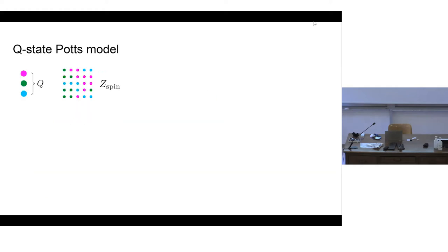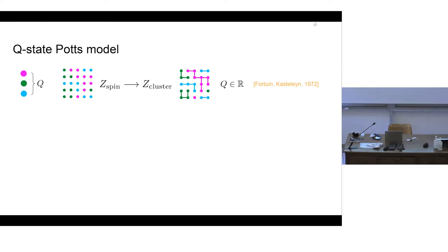A starting point to study the percolation model is to map it to a local spin model, which is given by the q-state Potts model. Each lattice site has a spin variable taking q possible different states, and we can write down the partition function in terms of spin configurations. We can rewrite this in terms of cluster configurations: if two neighboring sites share the same spin value, they form a bond, and the original parameter q — which labels the number of states — becomes just a weight associated with each cluster. The model is then analytically continued to arbitrary real values of q.